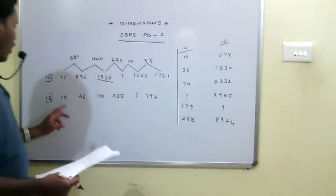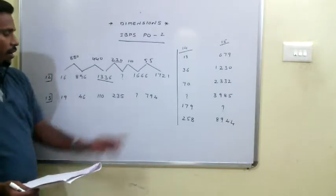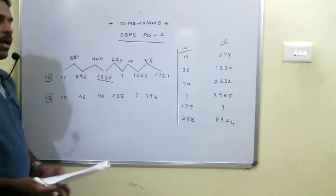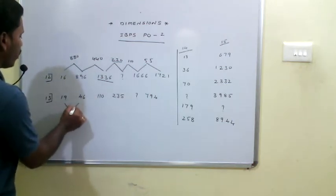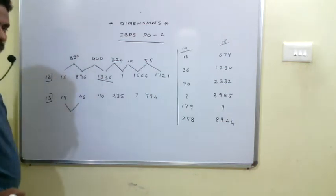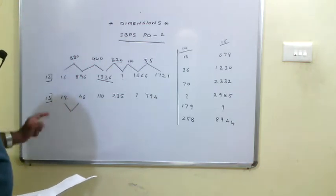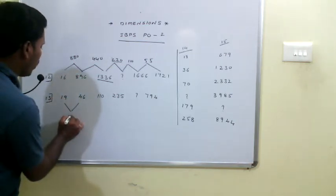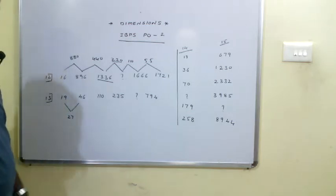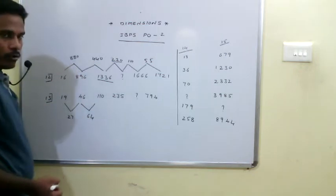The next series is: 1946, 110, 235, missing term, 94. We need to find the missing term. Using the same pattern, let us take the difference between these values. The difference between 19 and 46 is 27, which is 26 plus 1.